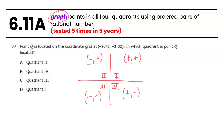As we look at this point, we notice that we have a negative x coordinate and a negative y coordinate. So from the origin, I'm going to be moving left and down, which puts me into quadrant III. So the answer is letter C.